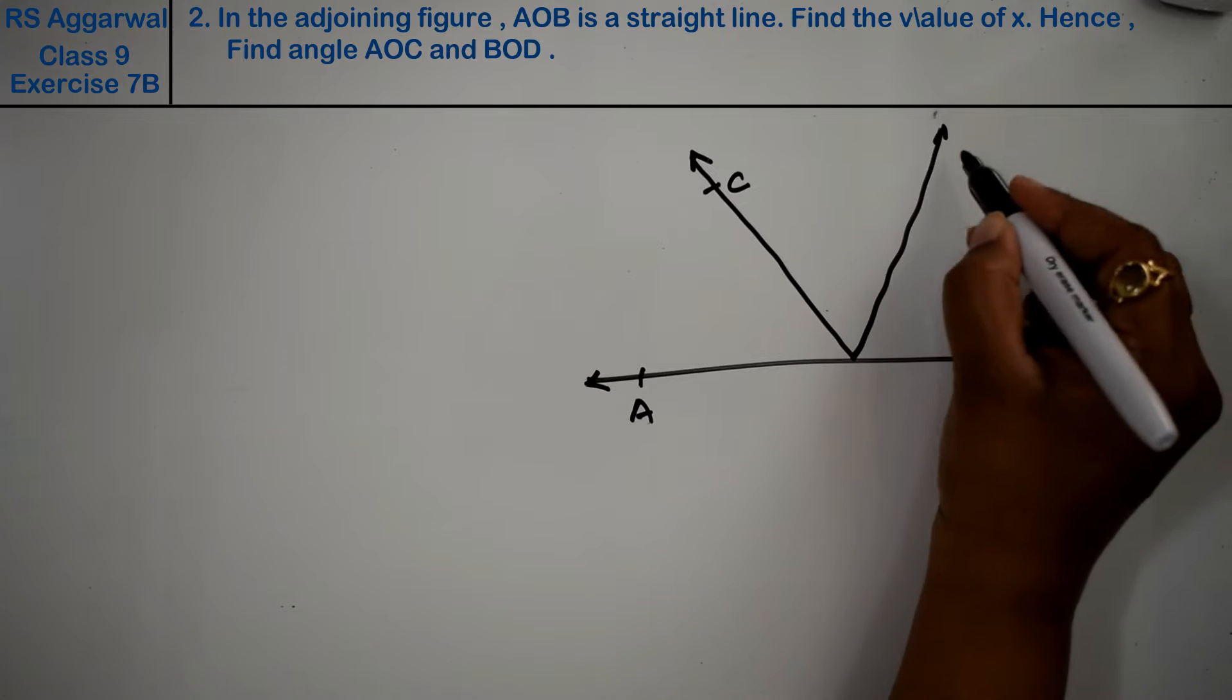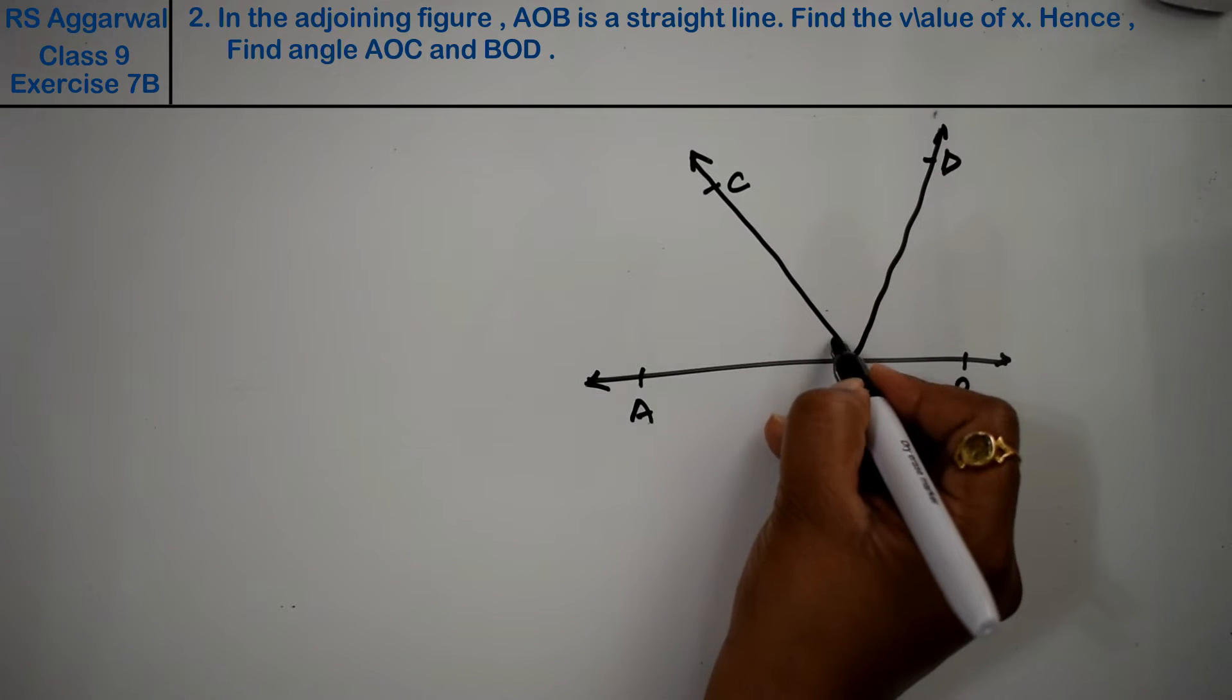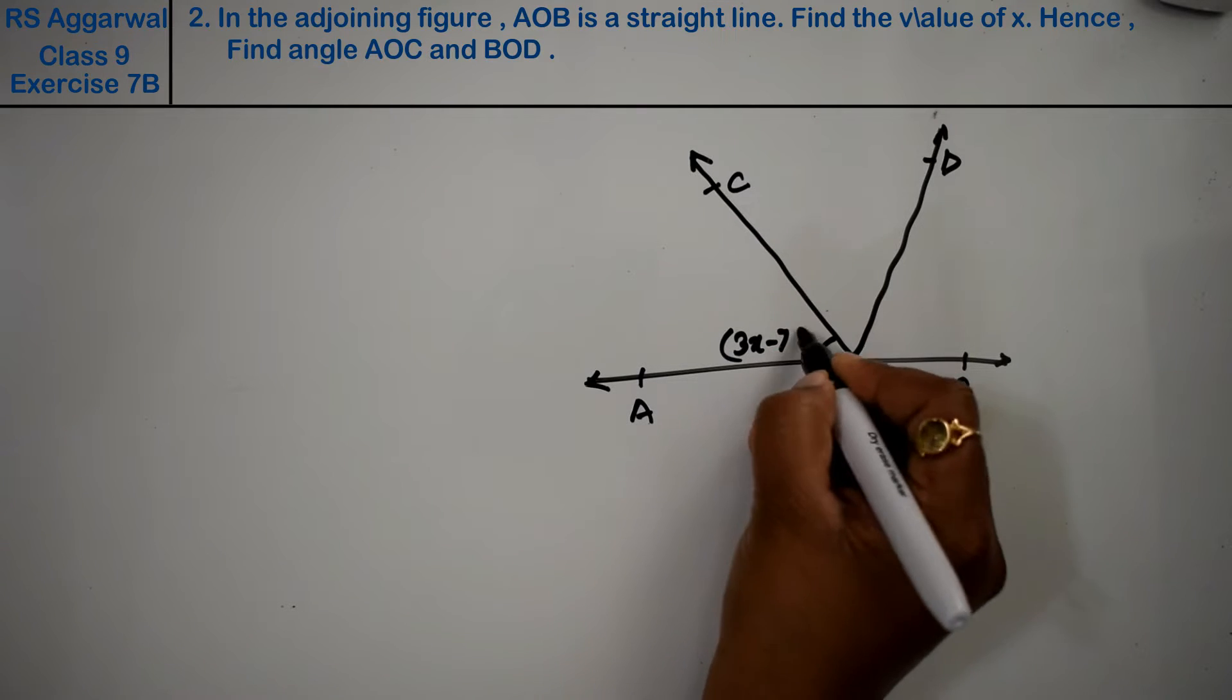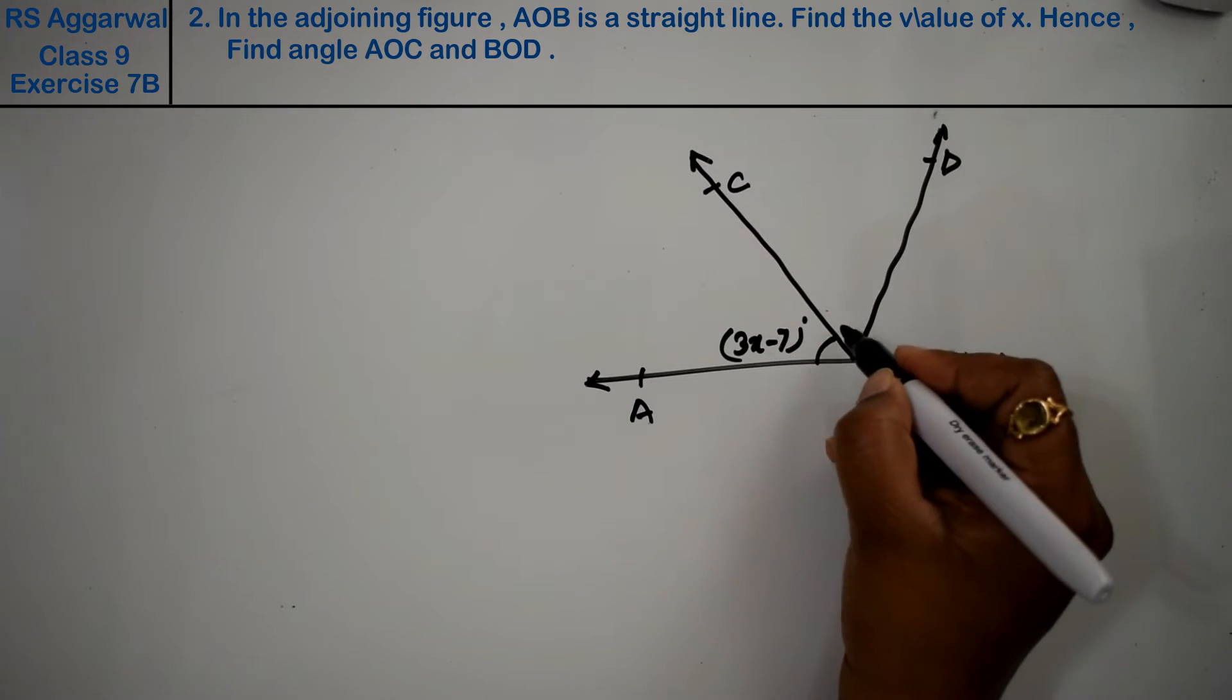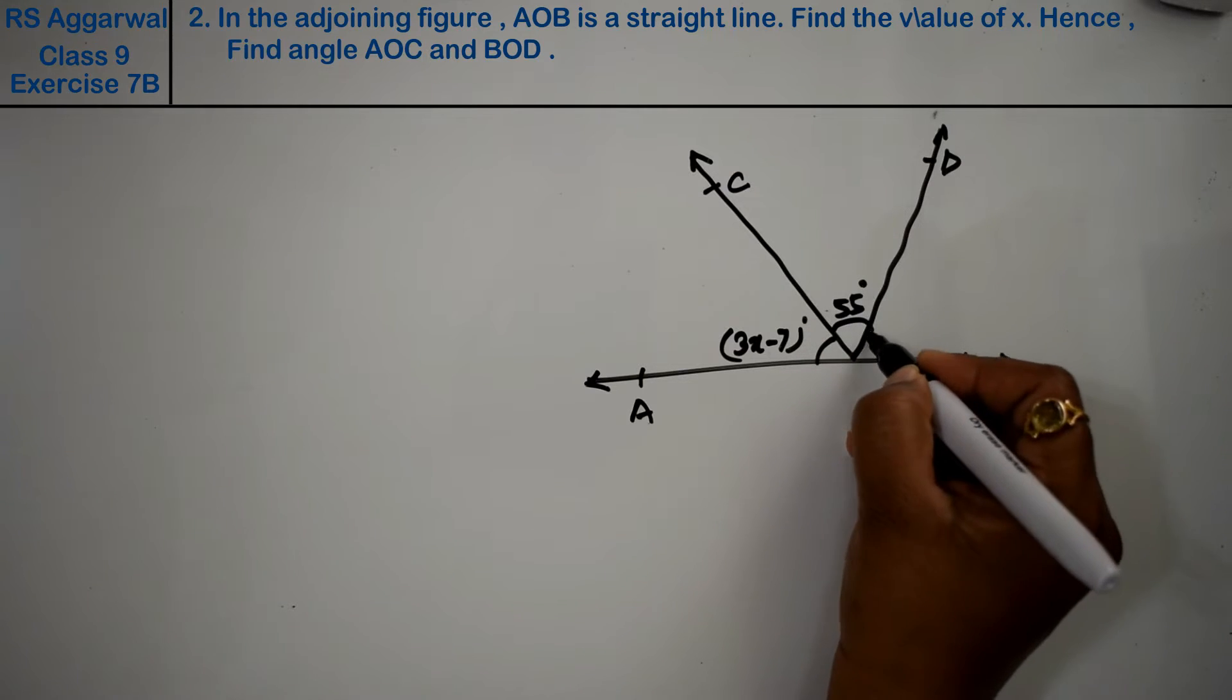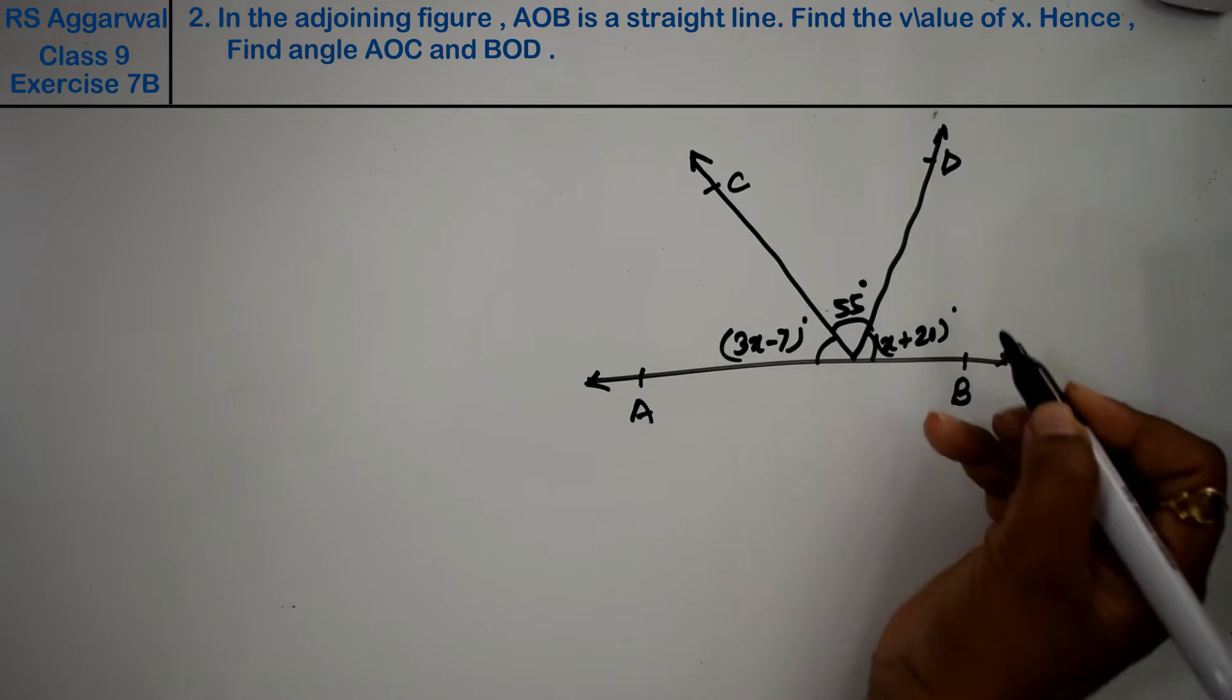This is point C, this is point D, and this is given 3x minus 7 degrees, this is 55 degrees, and this is x plus 20 degrees.